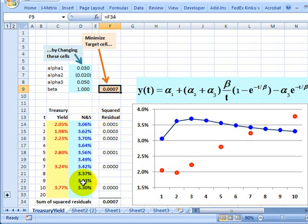And so the closer my function is to the actual points, the smaller these differences will be and the smaller the squared residuals will be.